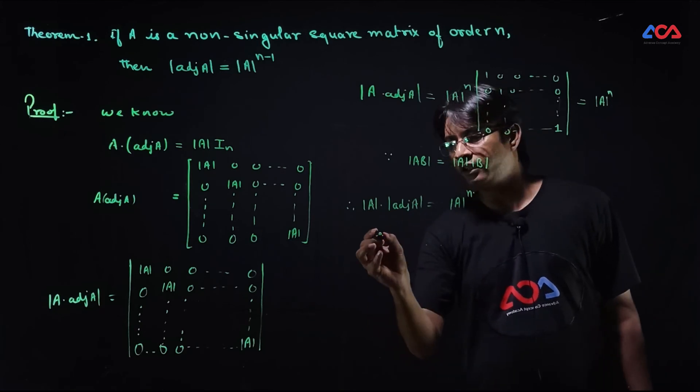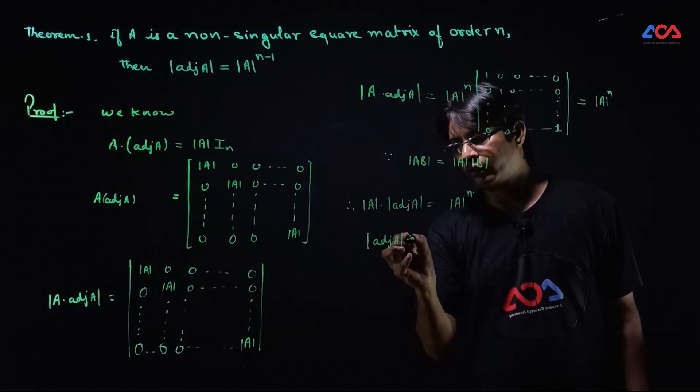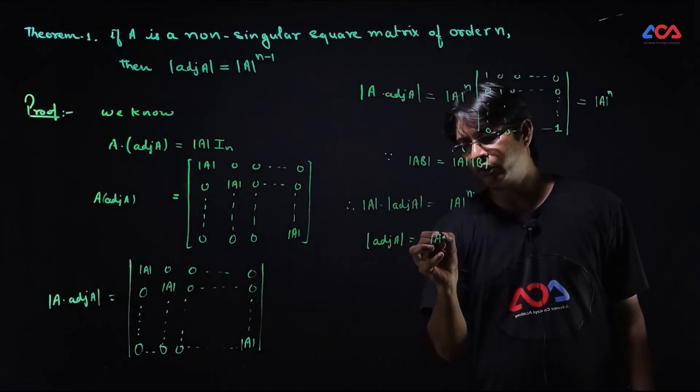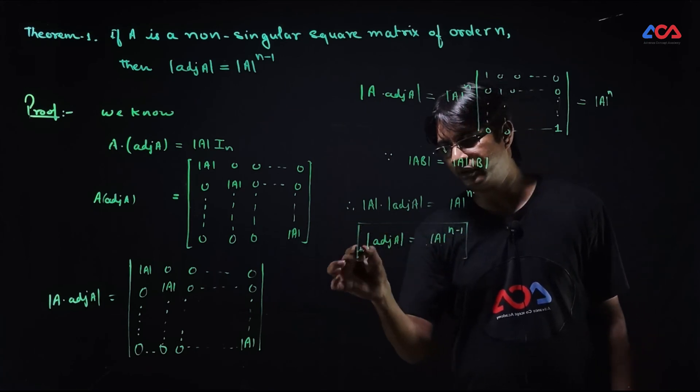Dividing both sides by determinant of A, we get determinant of adjoint A equals determinant of A to the power n minus 1. This is our result.